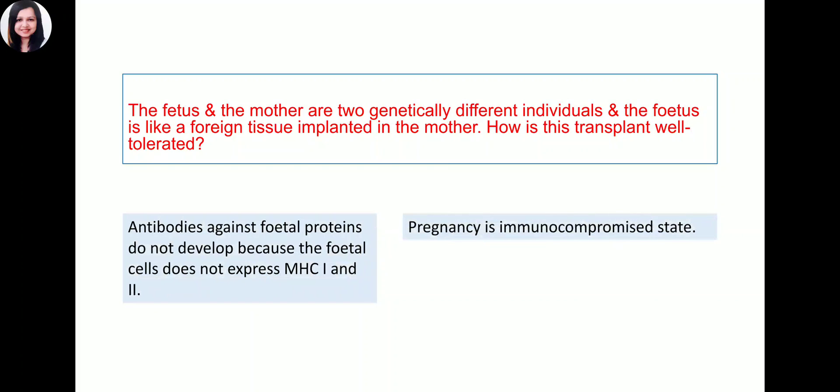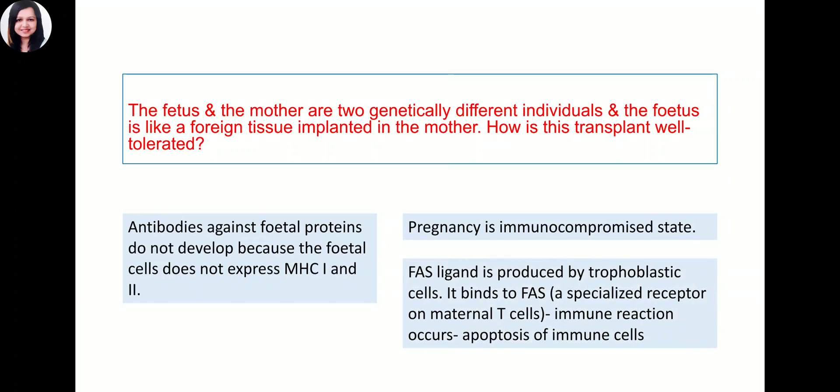Secondly, pregnancy is an immunocompromised state, so immunity is reduced. FAS ligand is produced by trophoblastic cells. This ligand binds to FAS receptor present on maternal T cells, leading to immune reaction and destruction of all maternal T cells, apoptosis of immune cells. So the mother's body well tolerates the fetus. Thank you very much.